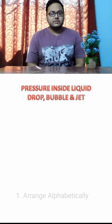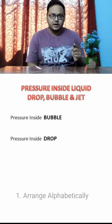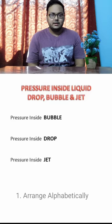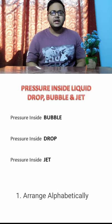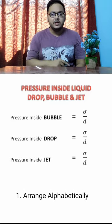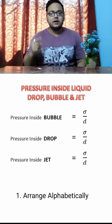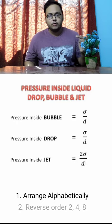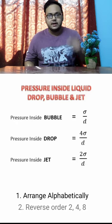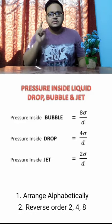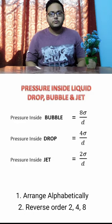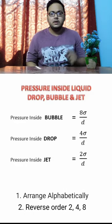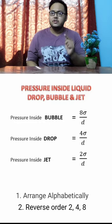Let's arrange the three in alphabetical order: bubble, drop and jet. Since pressure is force per length, equate all of them with sigma upon T. And now in the reverse order, arrange the powers of 2 — that is 2, 4 and 8. And these are the formulas for the pressure inside a liquid bubble, drop and jet.